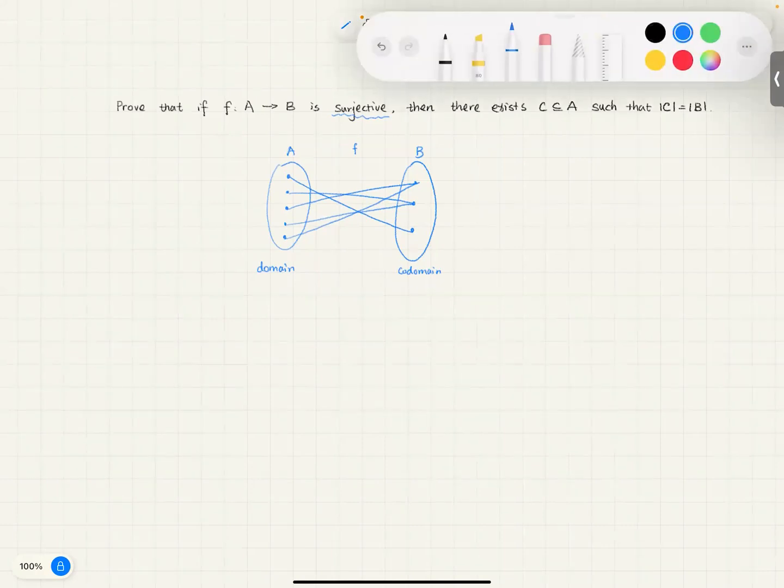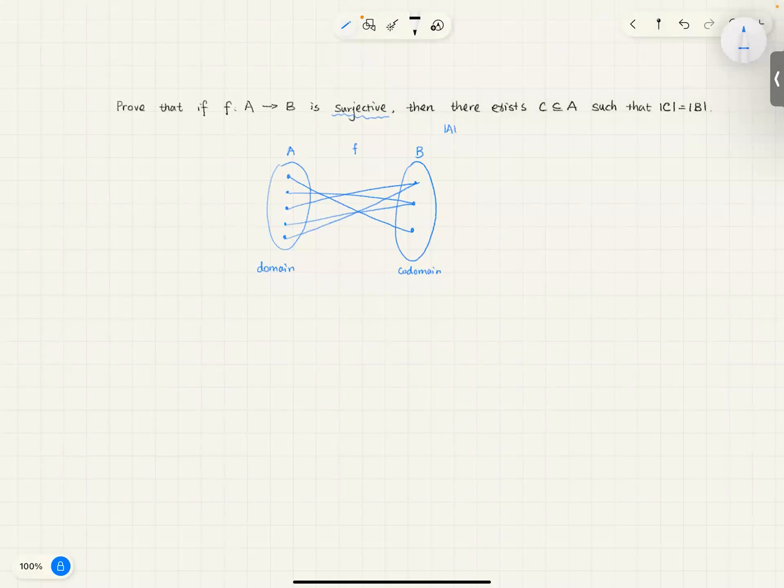If it's surjective, you would know that the cardinality of A must be bigger than or equal to cardinality of B, so part of A, for example, this part, must have the same cardinality of B, which makes sense.